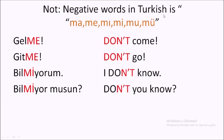Let's go over negative words in Turkish one more time. Negative: ma, me, mu, mü, mı, mi. Now some examples. 'Don't come' — 'gelme.' The negative 'me' comes right after the verb root. 'Gel' means 'come,' so 'gelme' means 'don't come.' 'Don't go' — 'gitme.' 'Git' means 'go,' so 'gitme' means 'don't go.' 'I don't know' — 'bilmiyorum.'